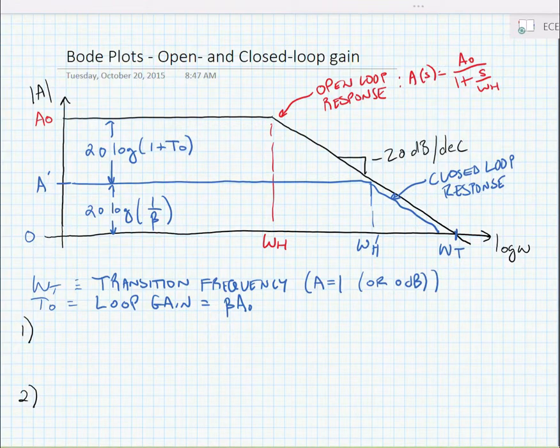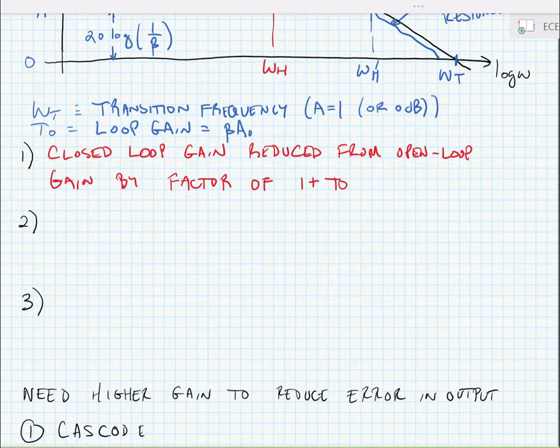So, what we can see is that the closed loop gain is reduced from the open loop gain by a factor of 1 plus T sub 0. So, this is one impact of negative feedback. The gain is reduced, but it's very stable, or I should say that it doesn't vary much.